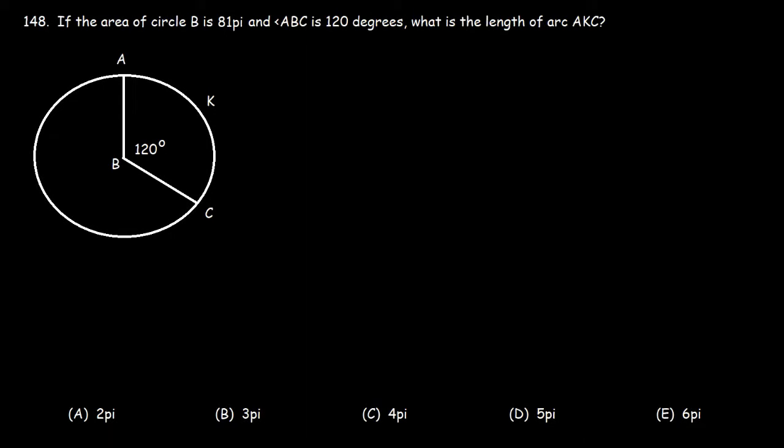Number 148. If the area of circle B is 81 pi and angle ABC is 120 degrees, what is the length of arc AKC?